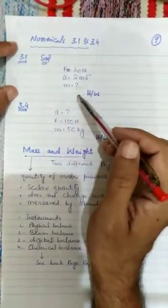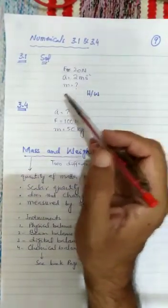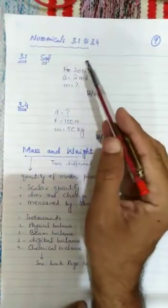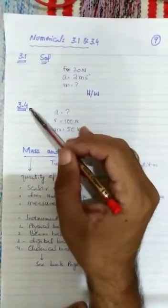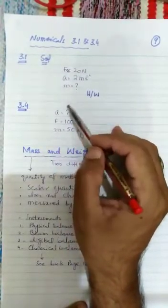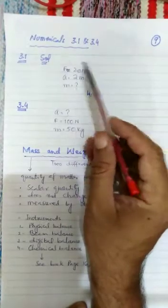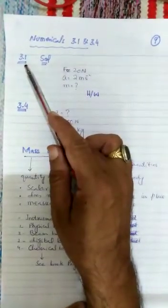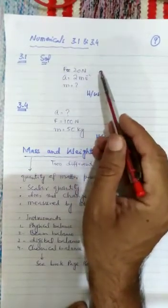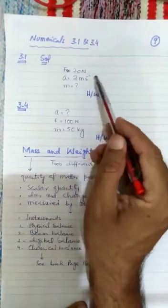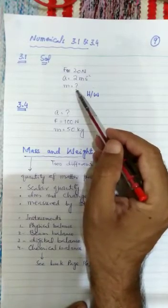Now girls, solution of numerical No. 3.1 and 3.4. They are very simple and easy numericals. You can see in your book, statement of numerical given at page No. 83. These two numericals are basically relevant to the previous topic. That's why I have selected these two numericals as a solution. You can see, numerical statement of 3.1 is: a force of 20 N moves a body with an acceleration of 2 m per second square. Then what is its mass?